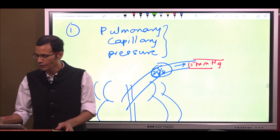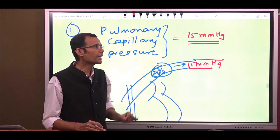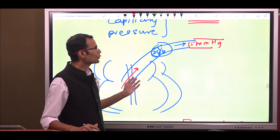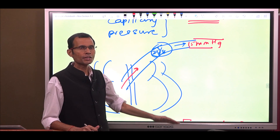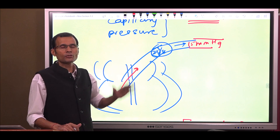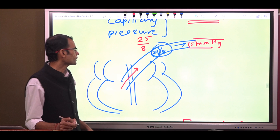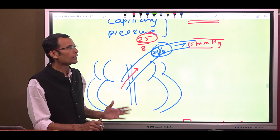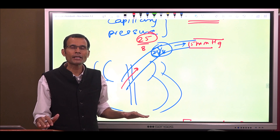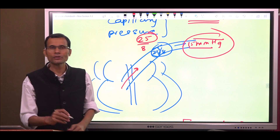Starting with pulmonary capillary pressure: this is about 15 mmHg and it is a naturally occurring pressure in the pulmonary capillaries. The right ventricle pumps blood into the pulmonary artery, then blood goes to the pulmonary capillaries, then the pulmonary vein brings oxygenated blood back to the left side of the heart. Pulmonary artery pressures are 25 systolic and 8 diastolic, and in the pulmonary capillaries the pressure is 15 mmHg.